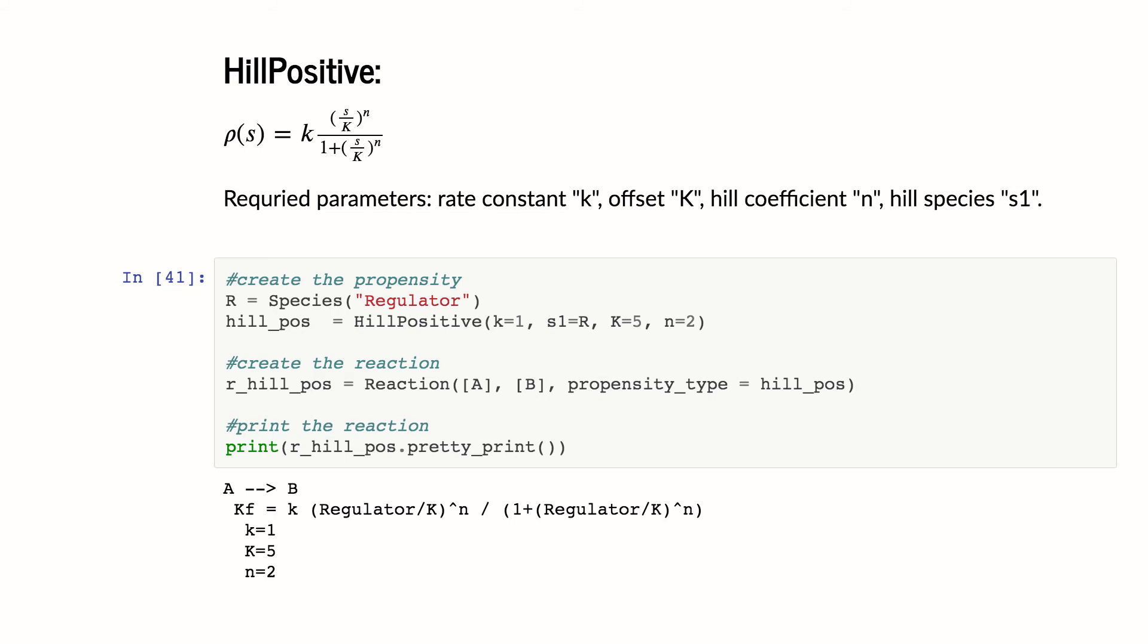So I make a hill positive propensity in this case. I pass in my parameters, which have values. In this case, S1 is R, is a regulator, is a species, not a number. But everything else is a number. And now I create my reaction, my reaction with the hill positive.